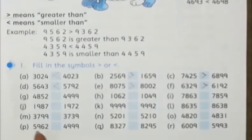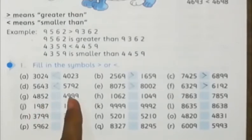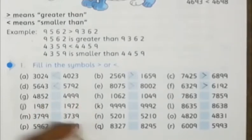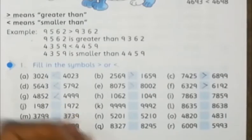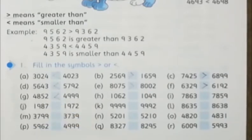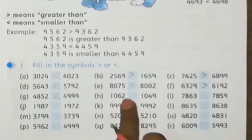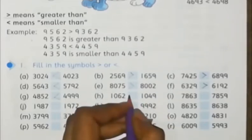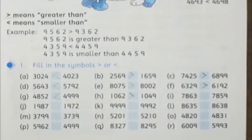In part G we have 4852 and 4999, so 4999 is greater. After that, 1062 and 1049 — which one will be bigger? 1062 will be bigger.